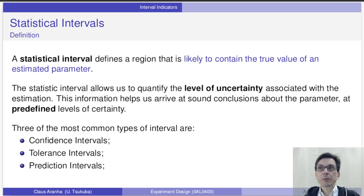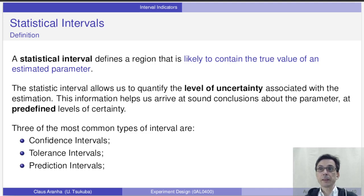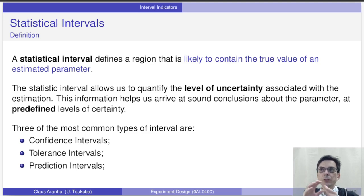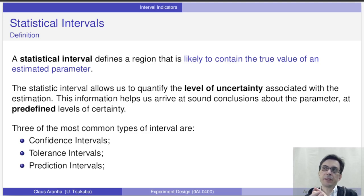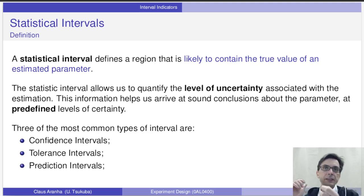There are three common types of statistical interval: confidence interval, tolerance interval, and prediction interval. In this lecture we are going to talk only about the first one, but you can learn about the others in the recommended readings. If you know about one, you can understand the others really easily.